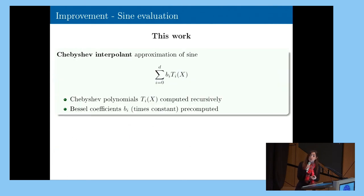So in our work, we decided to take a different approach. Instead of passing through the exponential, we go straight on the sign evaluation. And we approximate the sign evaluation by using the Chebyshev interpolant. So the Chebyshev interpolant is represented by the formula in the slide. It's just a linear combination of Chebyshev polynomials, which are recursively computed polynomials on the ciphertext, and they are multiplied by those coefficients, which can be pre-computed.